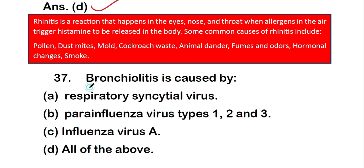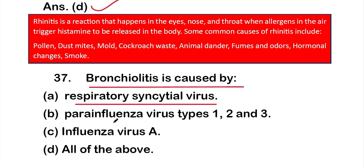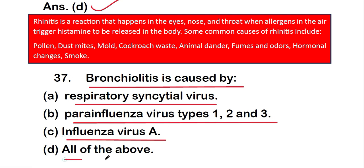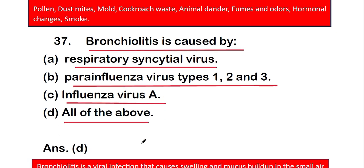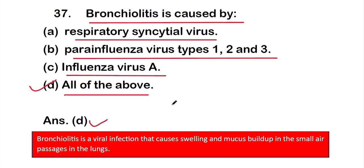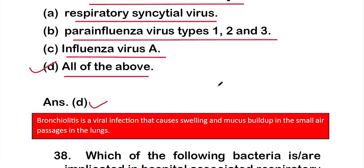Question 37: Bronchiolitis is caused by — option A: respiratory syncytial virus, option B: parainfluenza virus types 1, 2, and 3, option C: influenza virus A, or option D: all of them. The right answer is option D — all of the above are responsible for bronchiolitis. Bronchiolitis is a viral infection that causes swelling and mucus buildup in the small air passages of the lung.